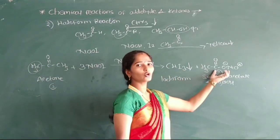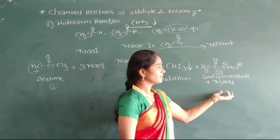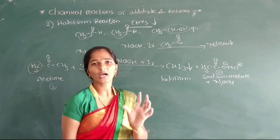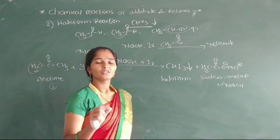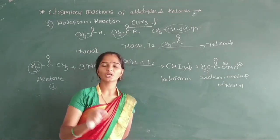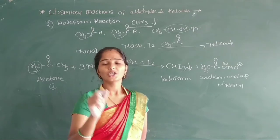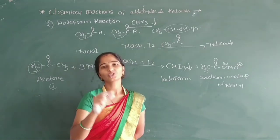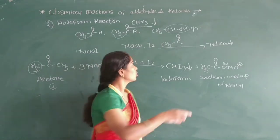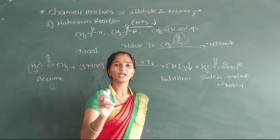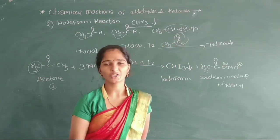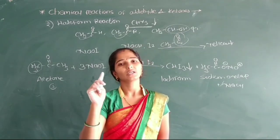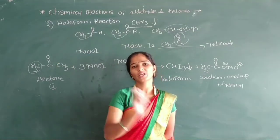This Haloform reaction is carried out for carbonyl compounds — those aldehyde compounds and those ketone compounds where the CH₃ group is attached to the carbonyl. Those where CH₃ is absent give a negative Haloform test. So we have studied two name reactions of aldehydes and ketones: first, the Cannizzaro reaction, and second, the Haloform reaction. Thank you.